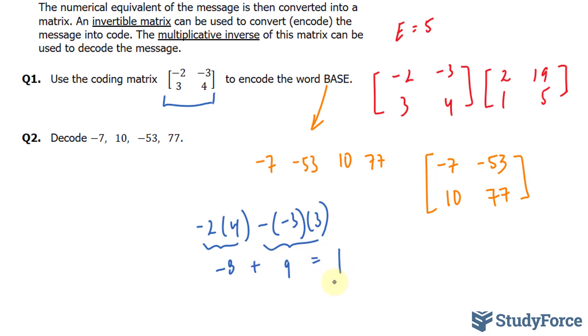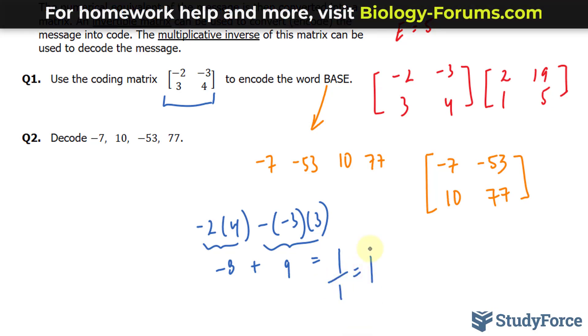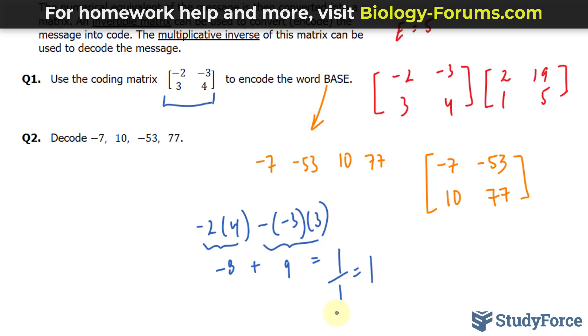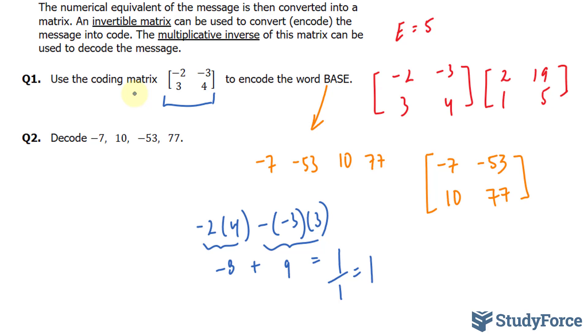We found the determinant, and now we have to find the reciprocal of that determinant. The reciprocal of 1 is 1. So to show you that, we have 1 over 1 is equal to 1. And the reason why this number is important is because we have to multiply this number to each element in the matrix that we'll be manipulating next.